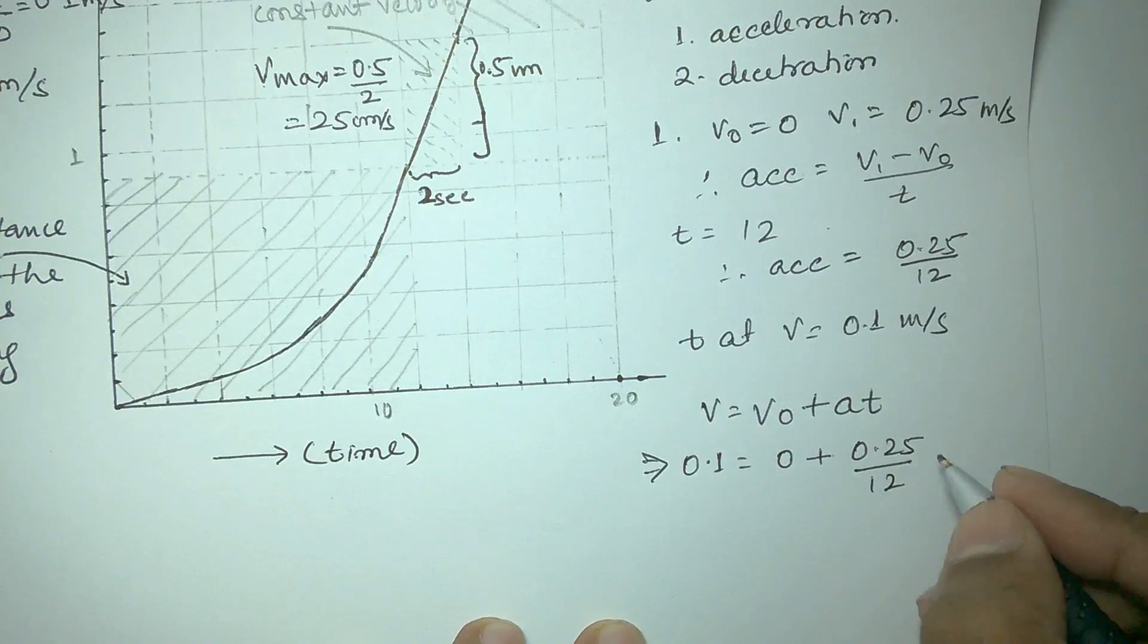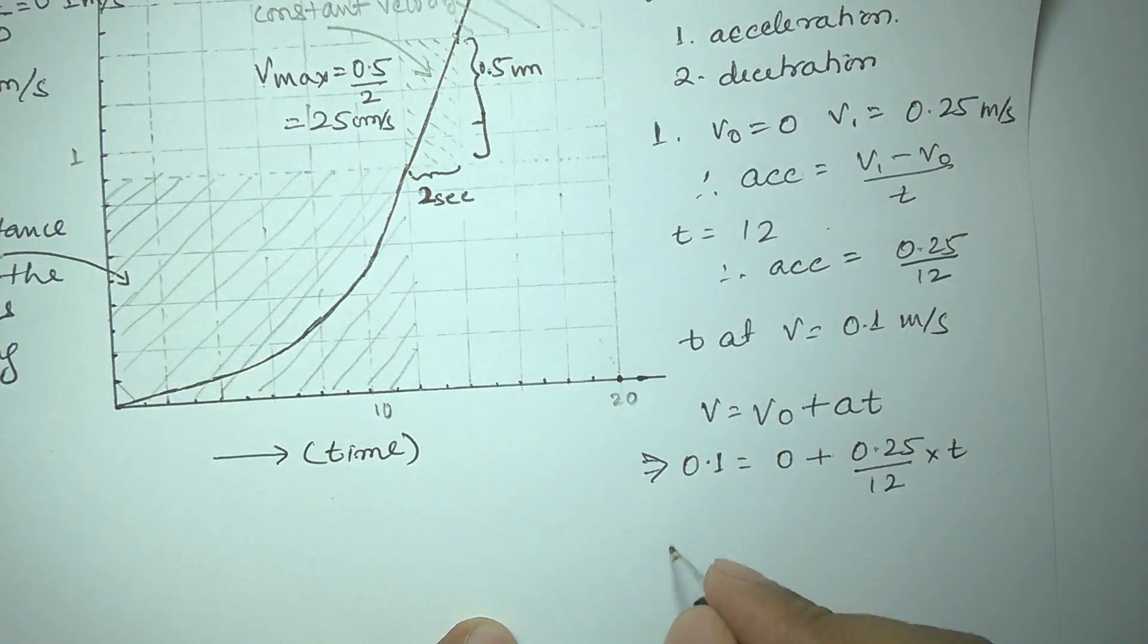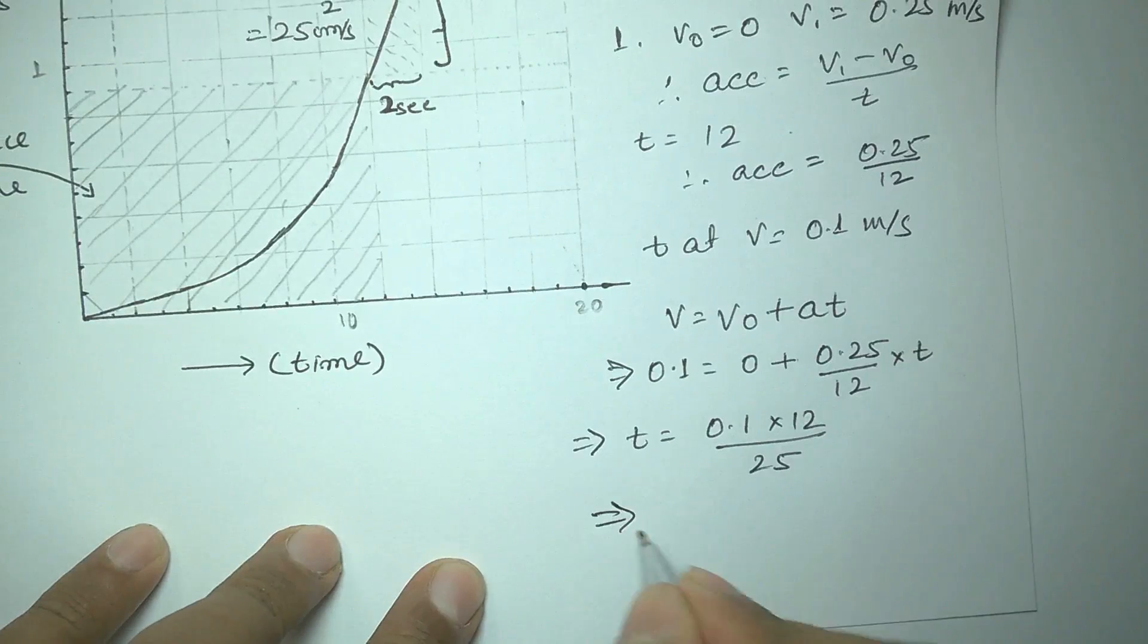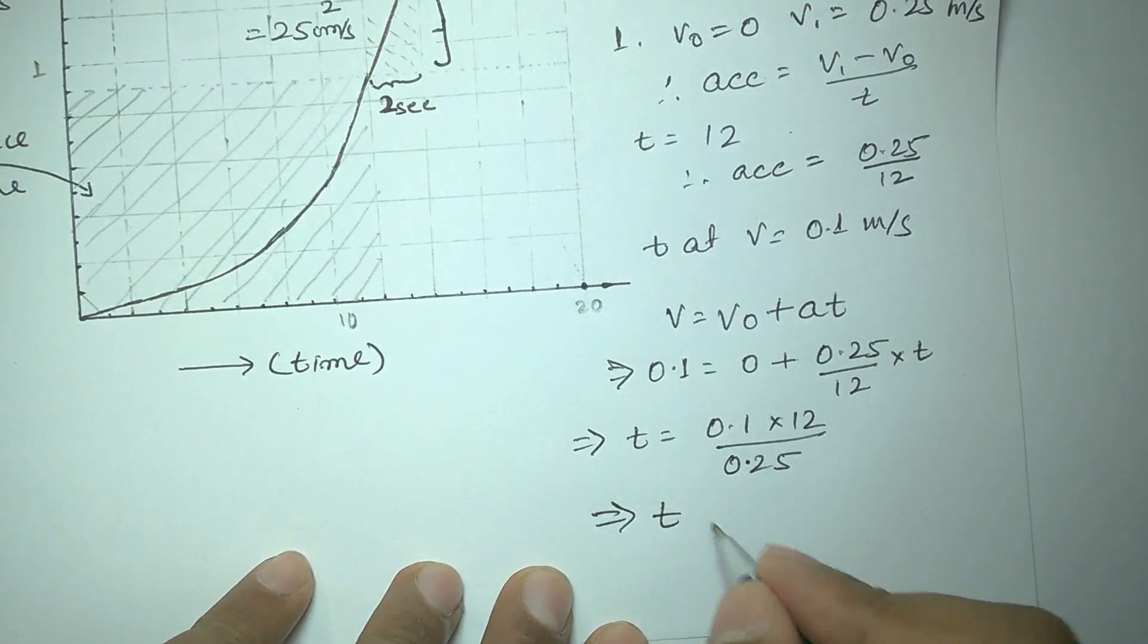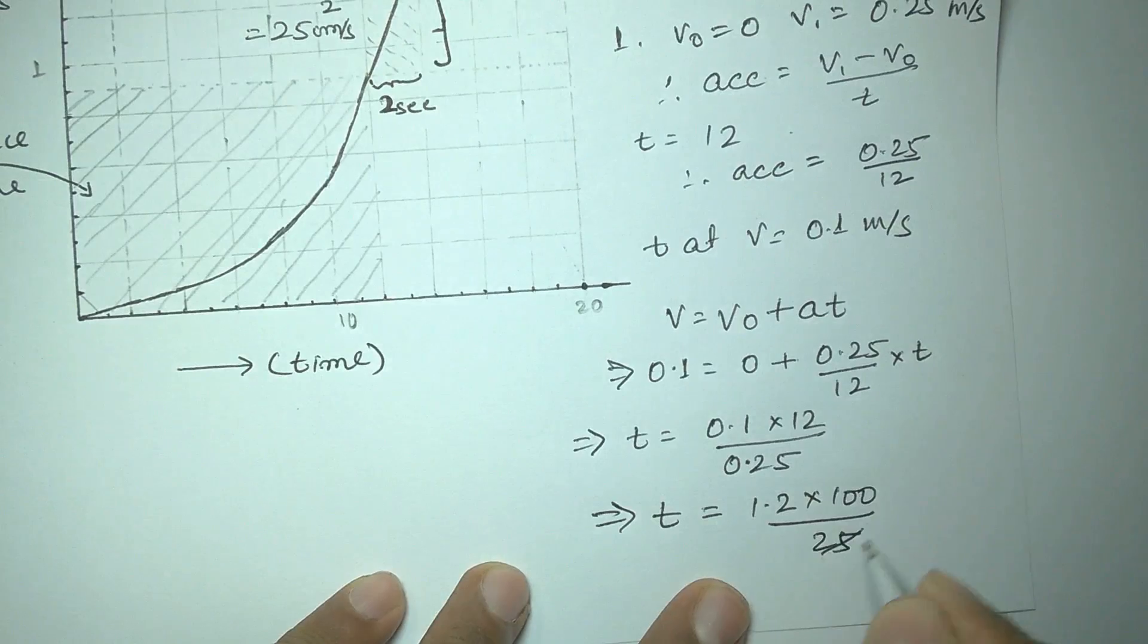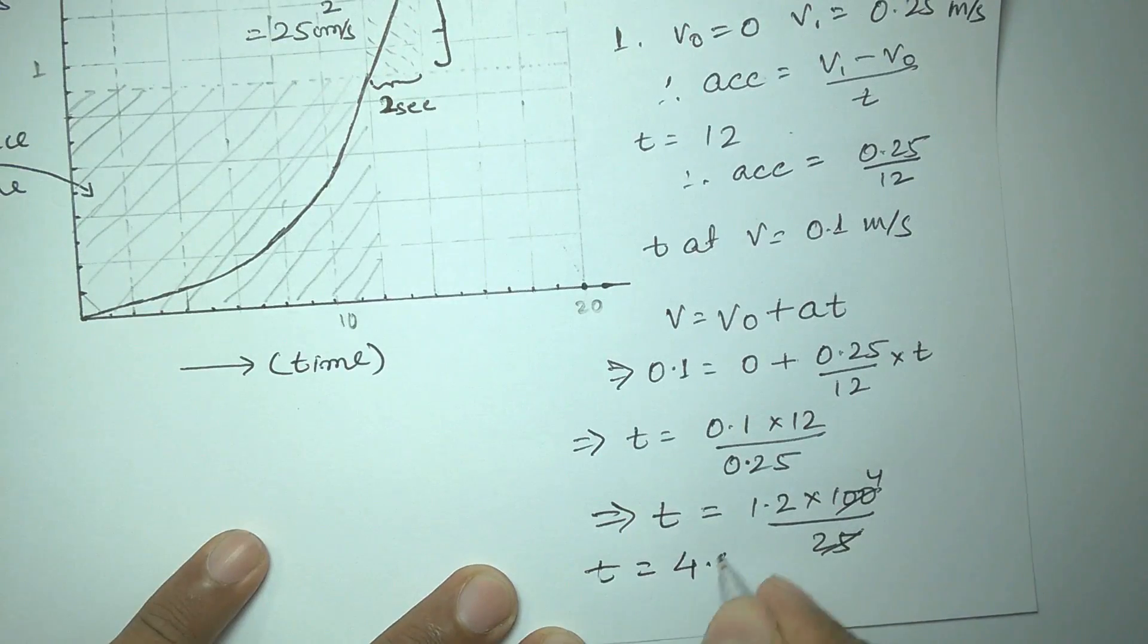Since v equals 0.1 meters per second and v0 equals 0 and acceleration is 0.25 per 12, after solving the equation we will get t equals 4.8 seconds.